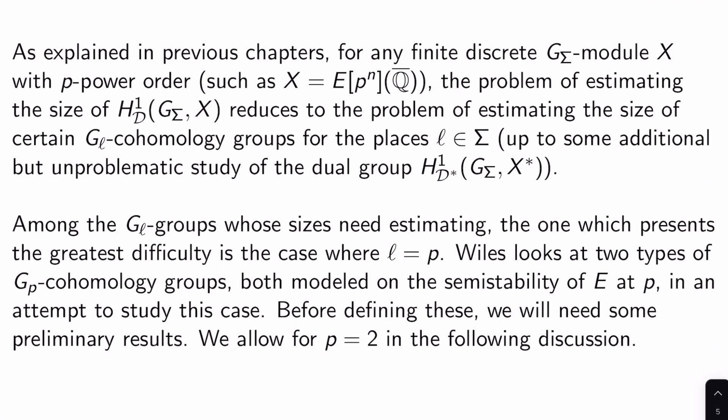As explained in previous chapters for any finite discrete G_sigma module X with P power order, for example, the Q bar points on the p^n torsion of an elliptic curve E, the problem of estimating the size of H^1(G_sigma, X) reduces to the problem of estimating the size of certain G_L cohomology groups for places L and sigma, up to some additional but unproblematic study of the dual group H^1_{D*}(G_sigma, X*). I'm not going to go through all this again. This was talked about in chapter four and also, I think, in the minimal deformation problem chapter.